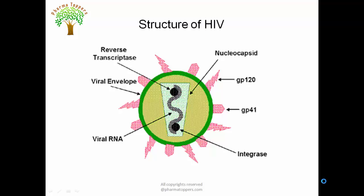Now we look at the structure of the virus that causes AIDS — Acquired Immunodeficiency Syndrome. Being a retrovirus, it has RNA as its genetic material. In this figure, the virus has an inner core envelope which contains the viral genetic material. The outer membrane shows certain projections consisting of two different proteins: GP41 and GP120. GP41 is the major protein responsible for integrating the virus with the host membrane.